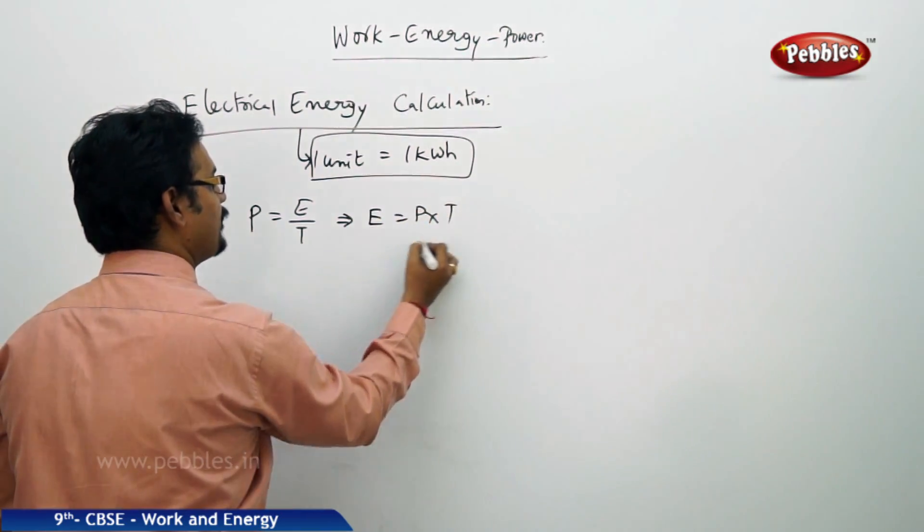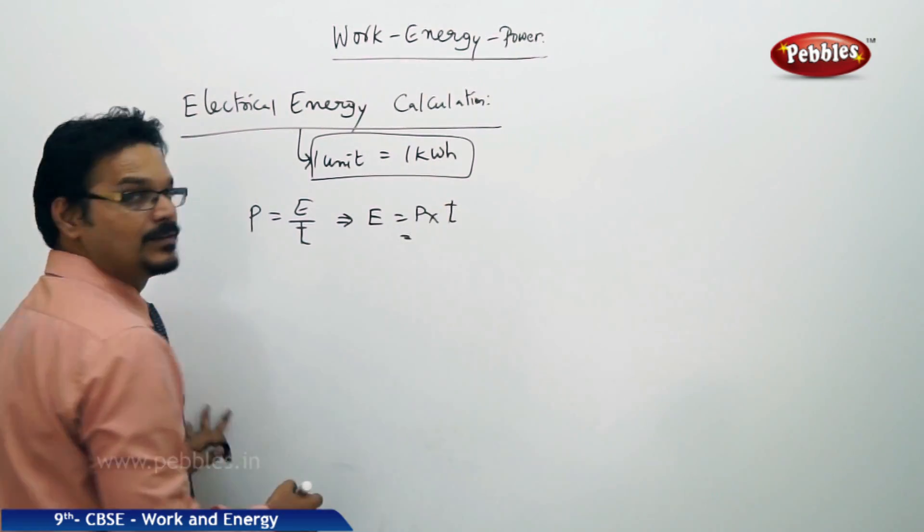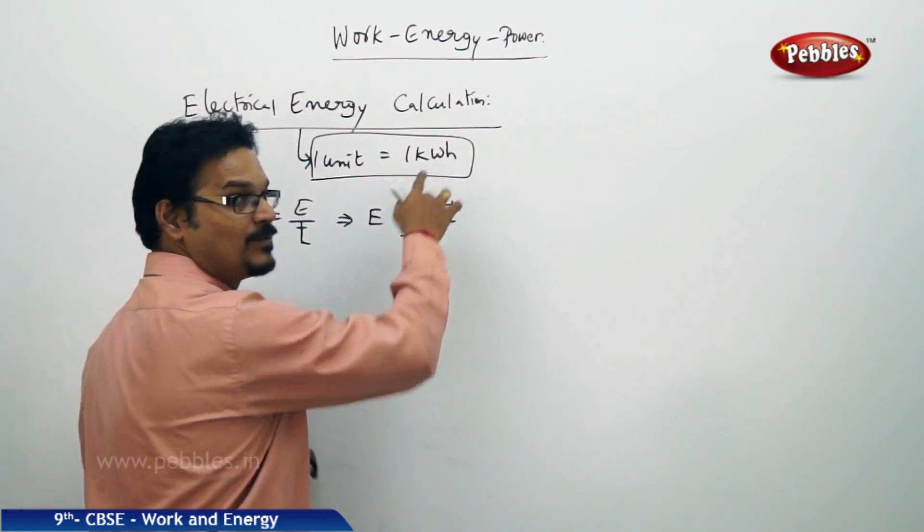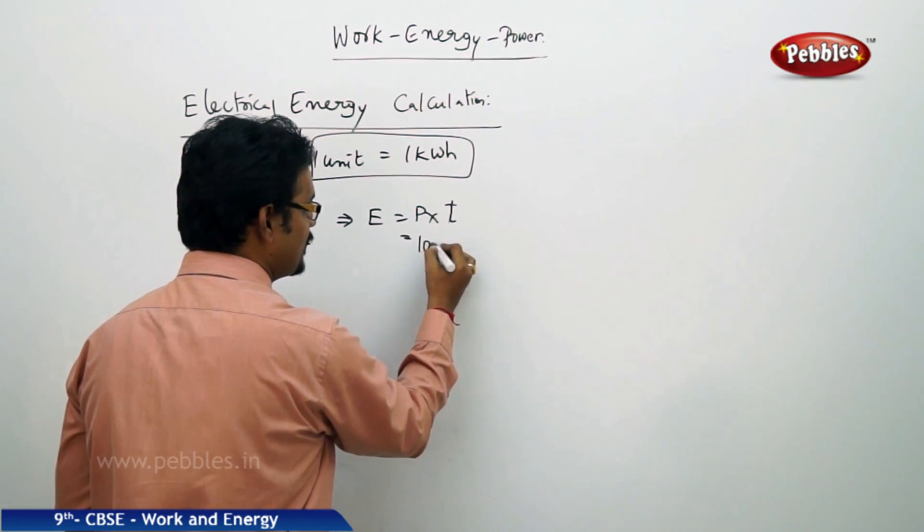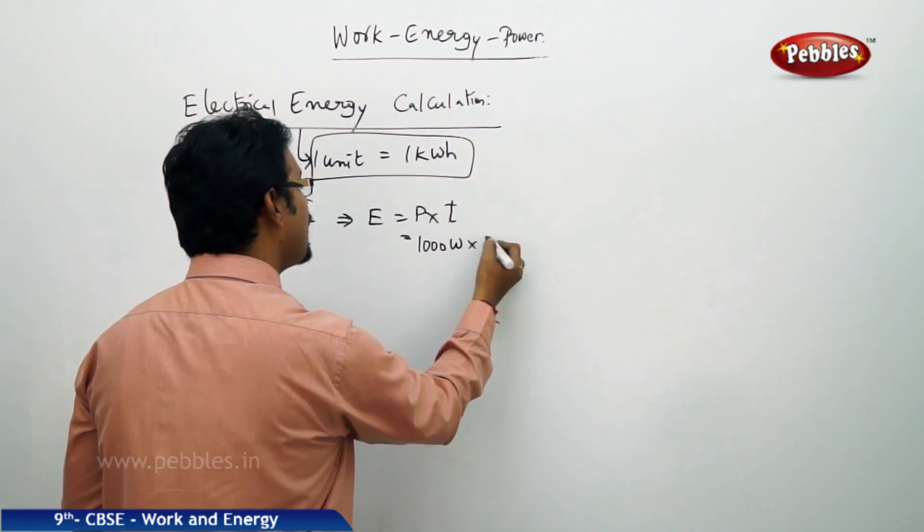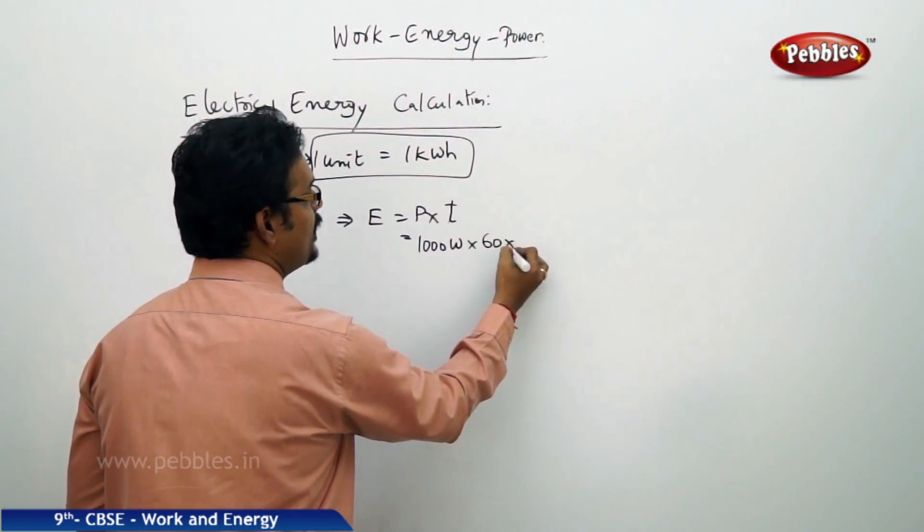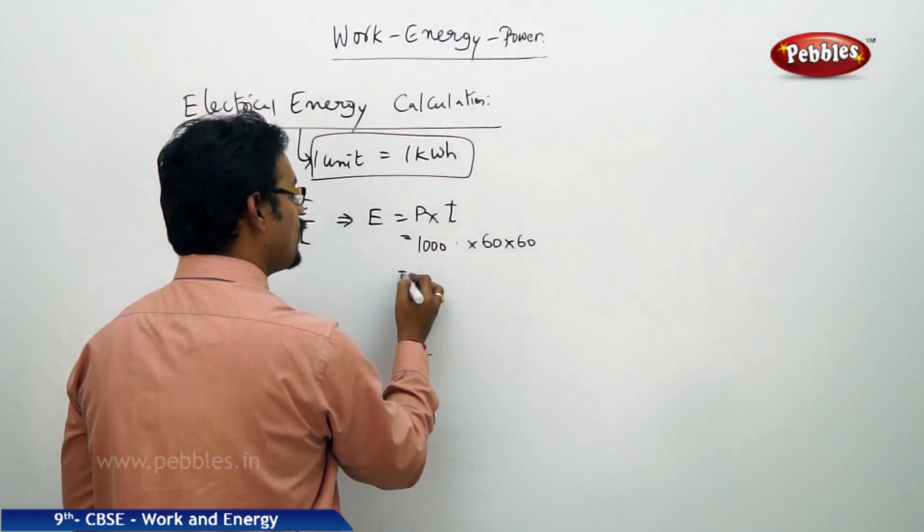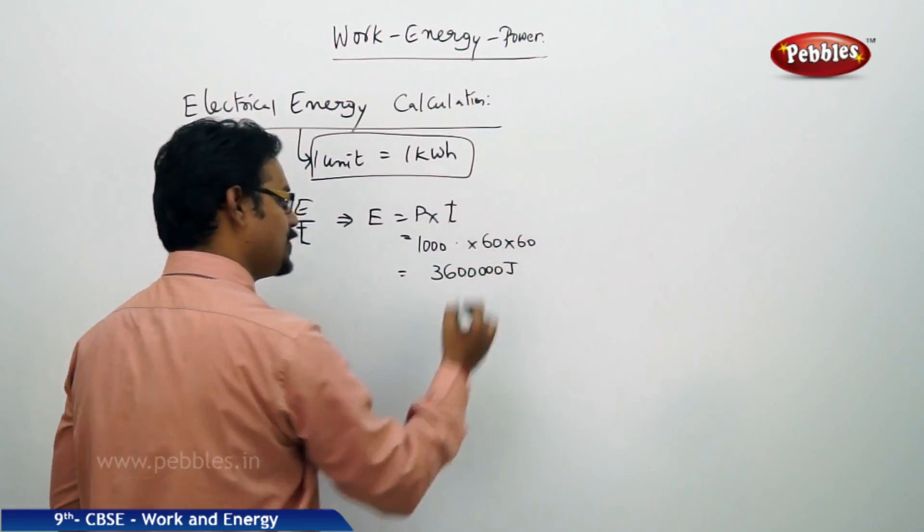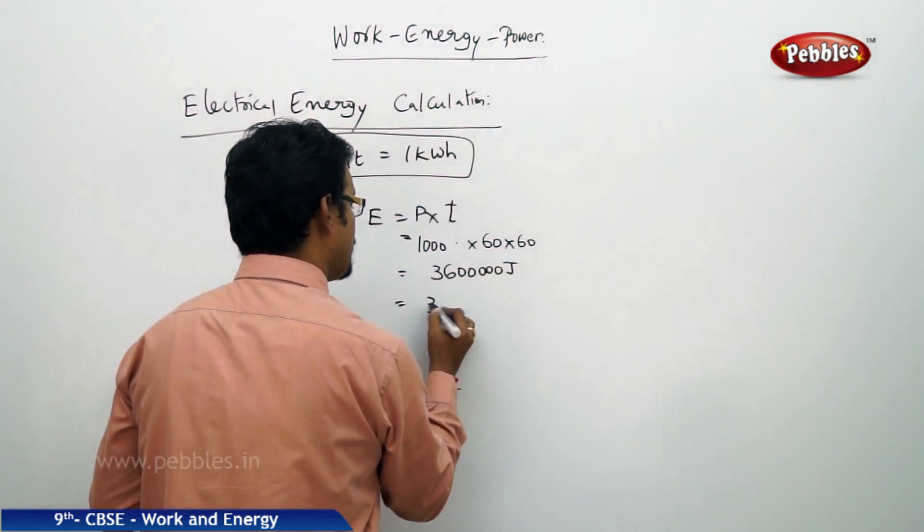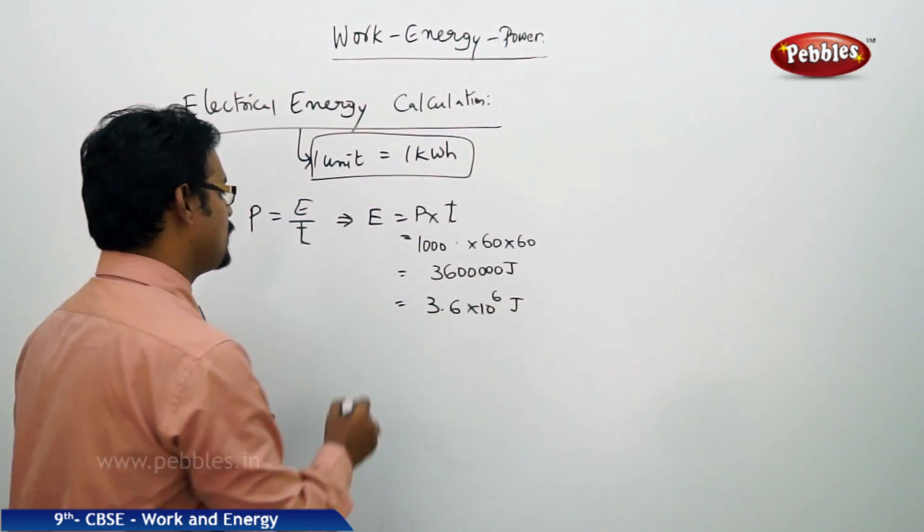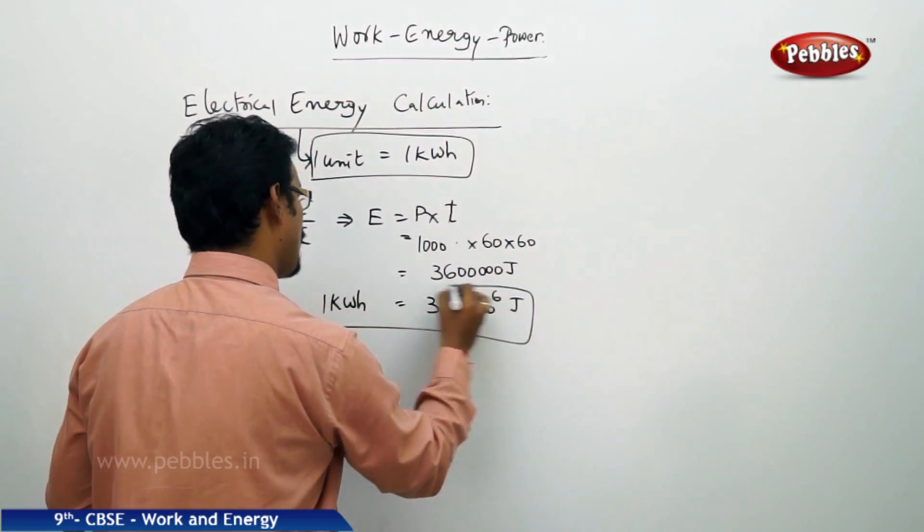Energy equal to power into time. Kilowatt hour. Kilowatt means thousand, thousand watt into time is hour. One hour is 60 minutes, one minute equal to 60 seconds. So if you calculate everything, you will get 36 lakh joules, or simply I can say 3.6 into 10 power 6 joules. So this is what 1 kWh value.